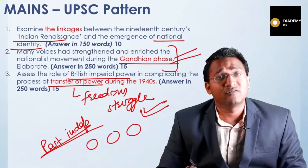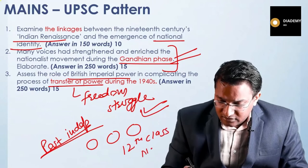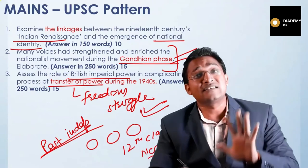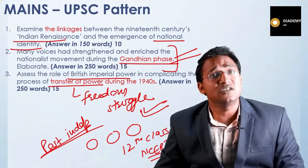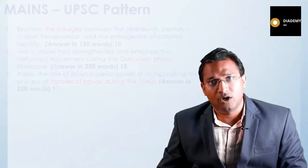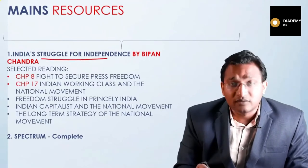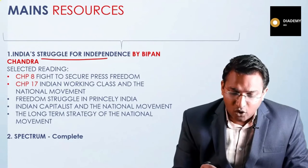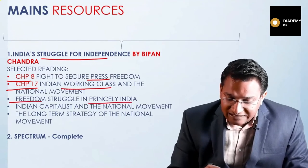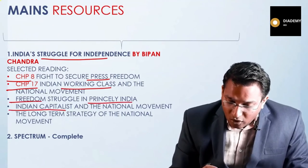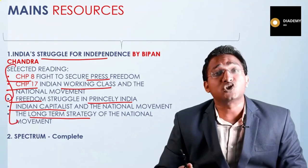For post-independence history, the Class 12 NCERT 'Politics in India Since Independence' gives a very good overview. You should not ignore it because you never know when UPSC will ask multiple questions from this area. For the mains, resources remain similar — go through Bipin Chandra's book with selective reading of chapters on the press (Chapter 8), working class (Chapter 17), freedom struggle in the princely states, Indian capitalists and the national movement, and long-term strategy of the national movement. Spectrum remains a must.